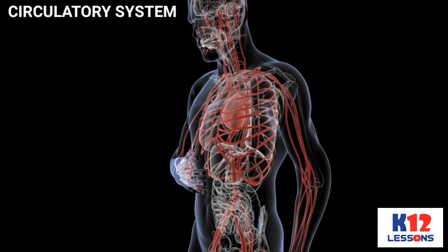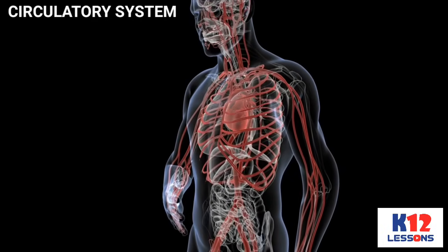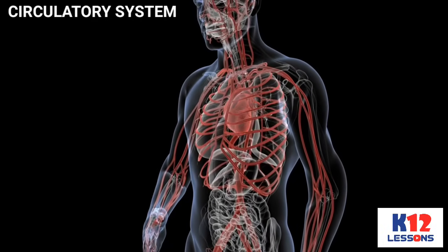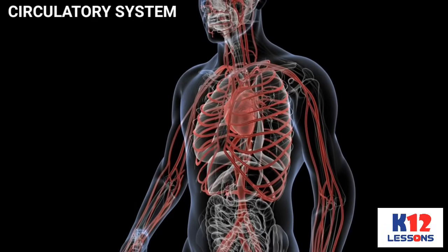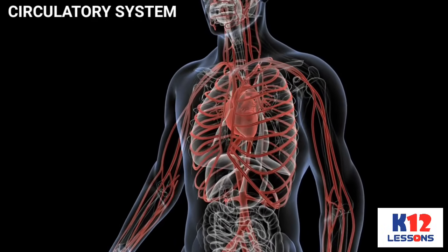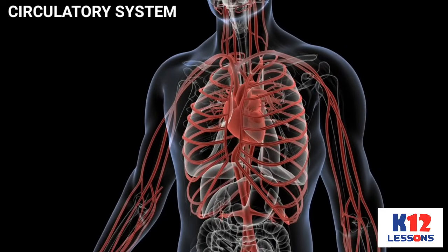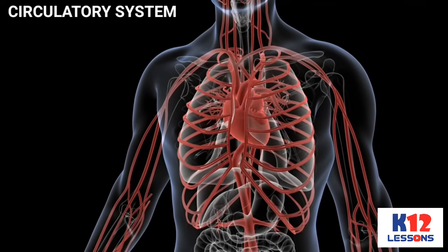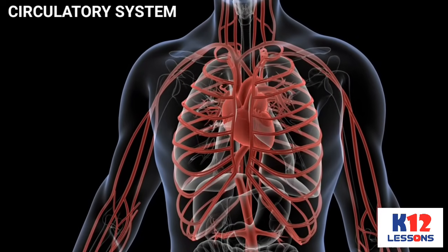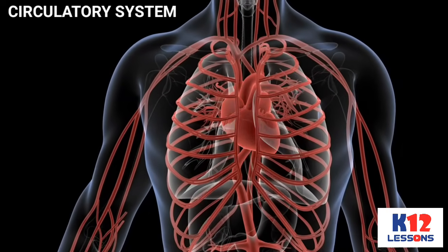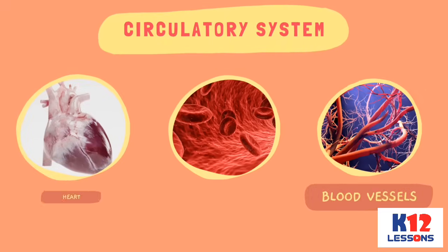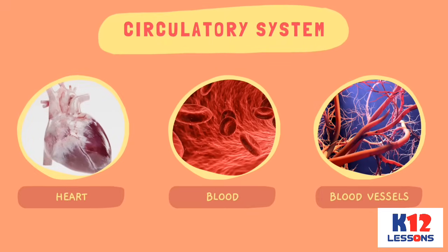The Circulatory System is one of the most important systems in the human body. It transports the needed blood and nutrients in the body. It consists of the heart, blood, and blood vessels.